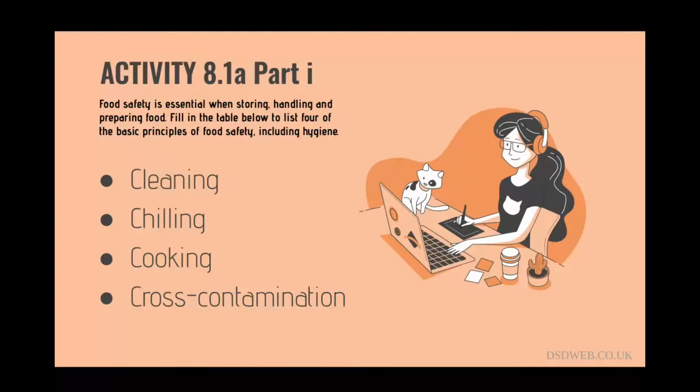Cooking certain items of food properly, particularly meat and fish, makes them safe to consume. A rule of thumb is that a temperature of 75 degrees Celsius at the centre of the food will ensure that all harmful bacteria is destroyed.